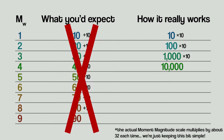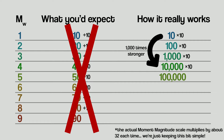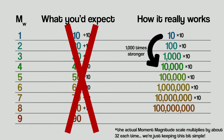Hold on — we're only at magnitude 4, and already the earthquake is 1,000 times more powerful than magnitude 1. Let's keep going: magnitude 5 would release 100,000 units of energy; magnitude 6, 1 million; magnitude 7, 10 million; magnitude 8, 100 million; and magnitude 9 would release 1 billion units of energy.